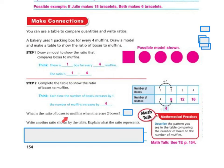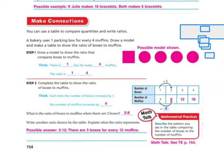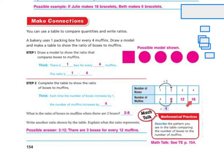What is the ratio of boxes to muffins when there are 2 boxes? If there are 2 boxes, it's going to be 8, so the ratio is 2 to 8. Write another ratio shown by the table and explain it. A possible answer is 3 to 12 — there are 3 boxes for every 12 muffins. I could have also said 4 to 16, or continued the chart further.